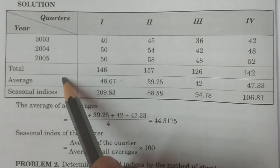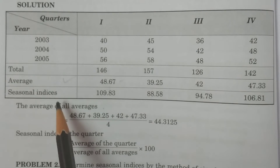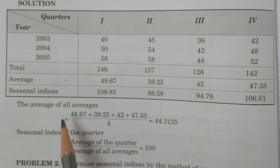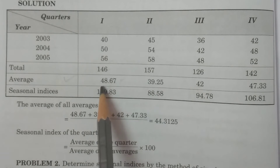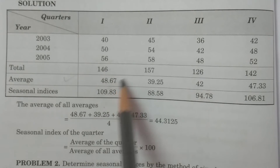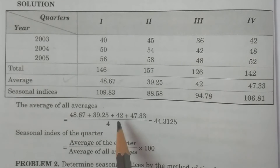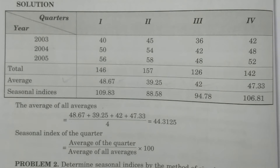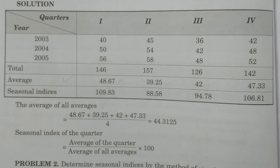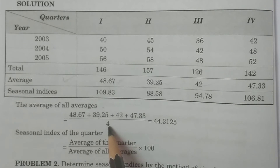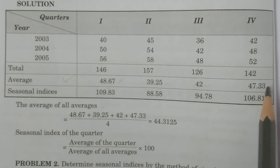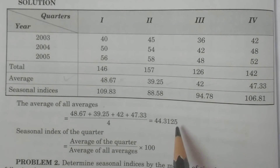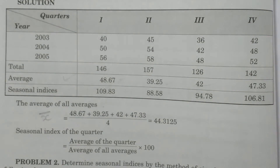Similarly, calculate averages for the second, third, and fourth quarters. These form the column of averages: 48.67, 39.25, 42, and 47.33. To find the overall average x̄, add all quarterly averages and divide — giving x̄ = 44.3.